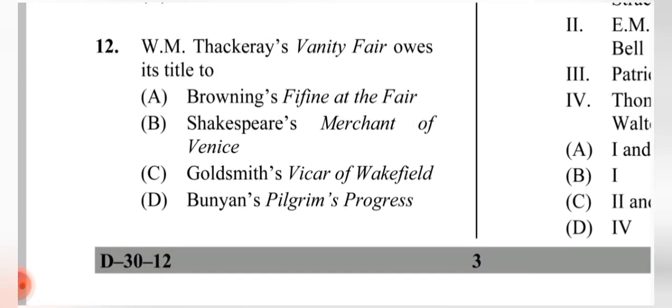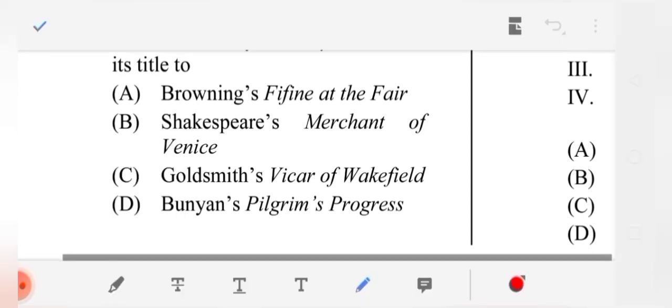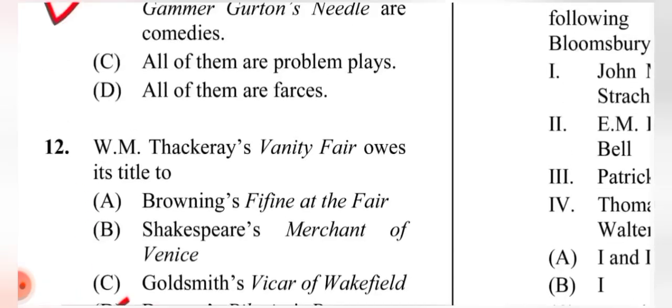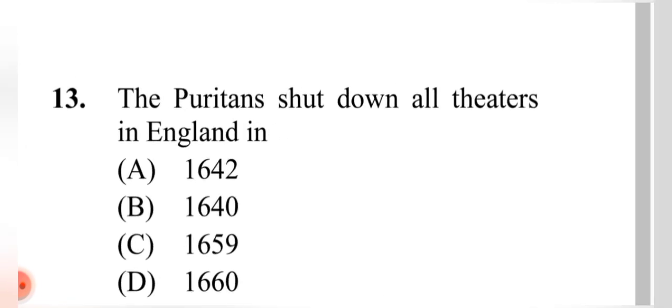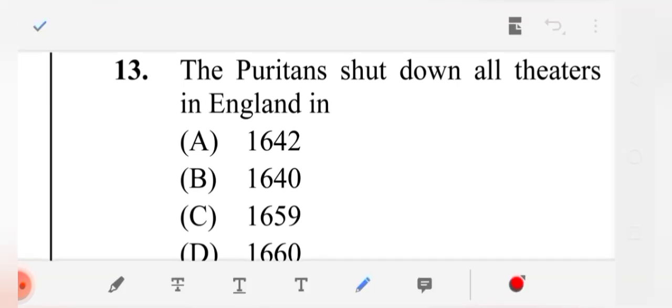Question 12: WM Thackeray's 'Vanity Fair' owes its title to (D) John Bunyan's 'Pilgrim's Progress.' Question 13: The Puritans shut down all theatres in England — according to my research, this was in 1642, but please verify.